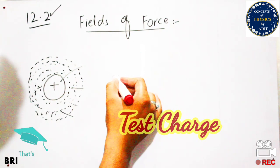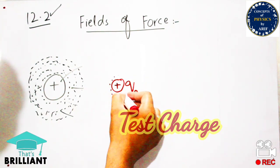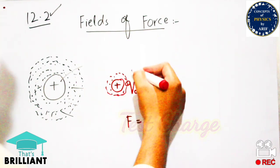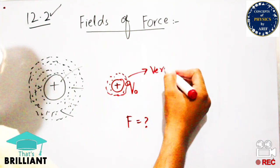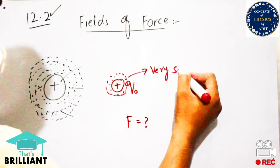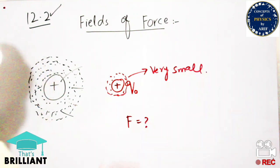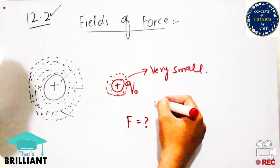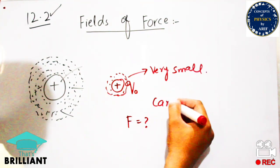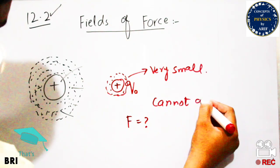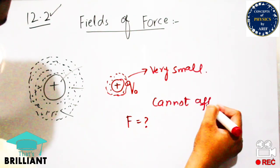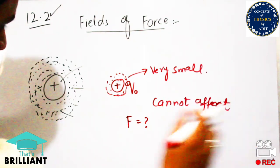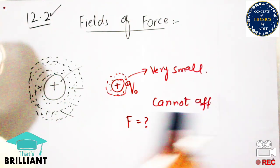By placing this test charge near the source charge, we can feel a force — either attraction or repulsion. Since both are positive charges, a force of repulsion will be generated. When we try to move this point charge towards the source charge, it will repel, and we will feel a force of repulsion.